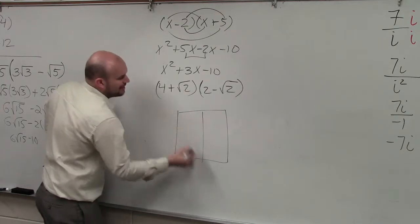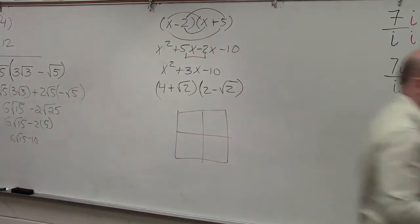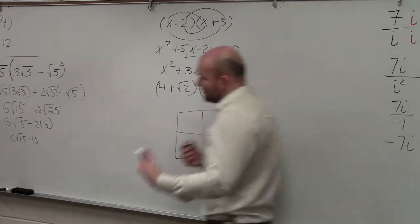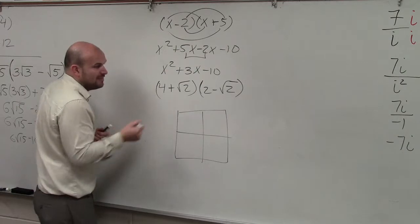I'm just going to go ahead and use the box method. Just because that's a method that I prefer, it's much easier to organize everything. So if I'm going to use the box method, again, you're just multiplying two binomials.